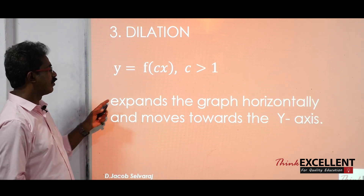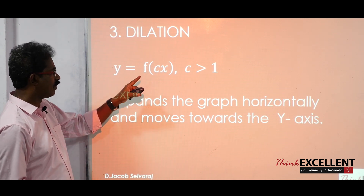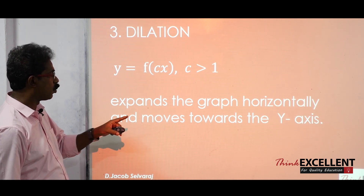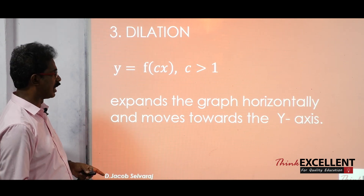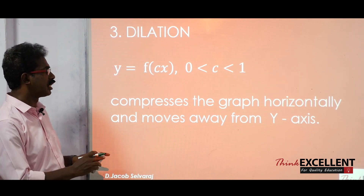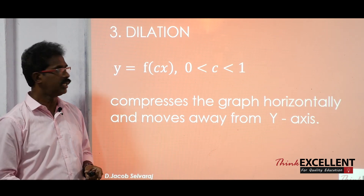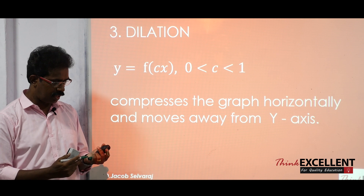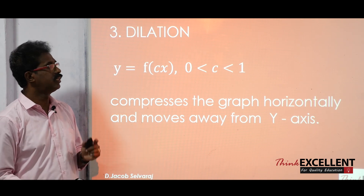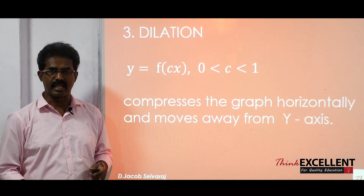The same applies for f(cx): when c is greater than 1 it moves towards the y-axis (away from x-axis), and when c is between 0 and 1 it moves away from the y-axis (closer to the x-axis). These are the three types of transformations — reflection, translation, and dilation. Now we are going to see some graphs.